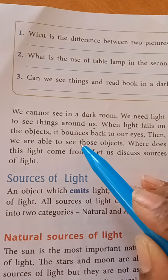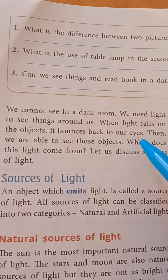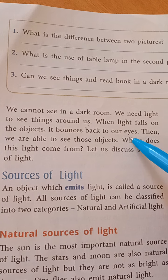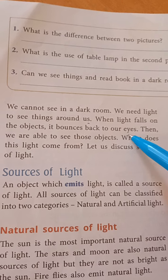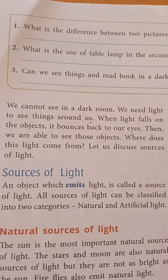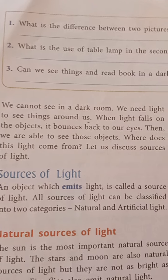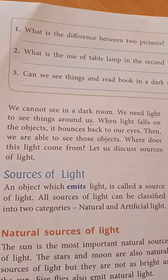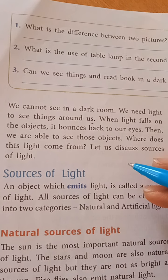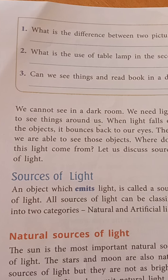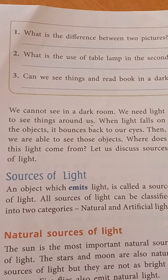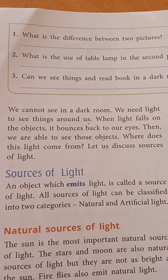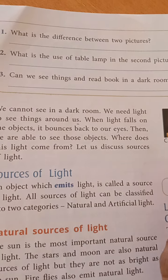What happens when light falls on an object? It bounces back to our eyes — it reflects the light back to our eyes. And then we are able to see, for example, the blackboard.